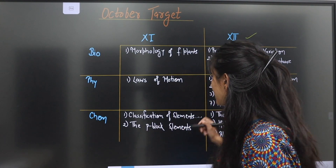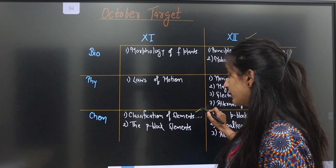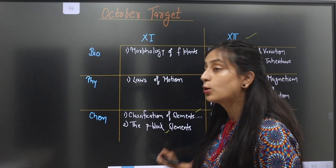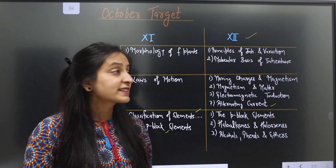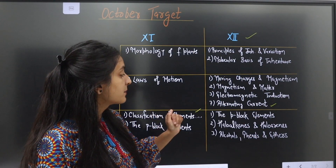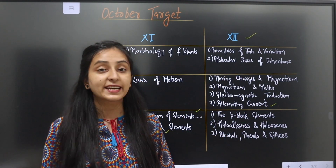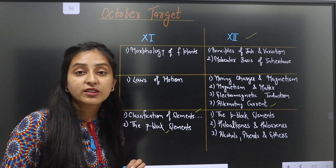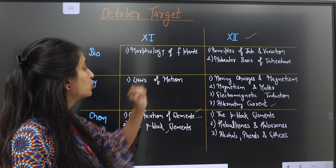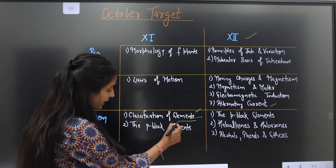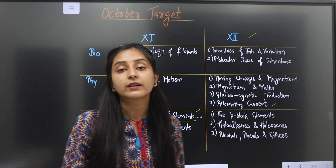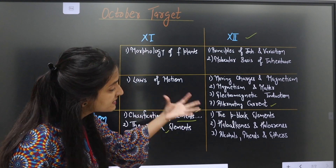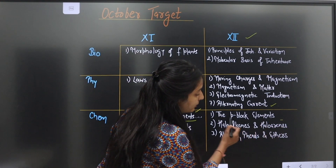Class 11 Chemistry — Classification of Elements and Periodicity in Properties. Class 11 Chemistry — P-Block Elements. In the same way, Class 12 Chemistry — P-Block Elements, Haloalkanes and Haloarenes, and Alcohols, Phenols, and Ethers. In Chemistry, I will cover Class 11 Classification of Elements and P-Block Elements, because this will be your basic foundation for reading Class 12 P-Block Elements.